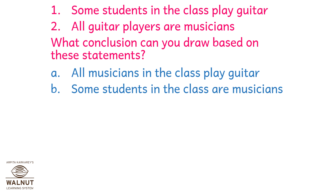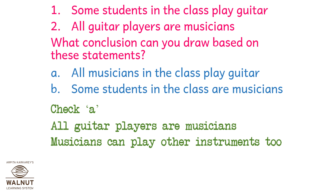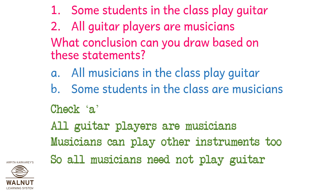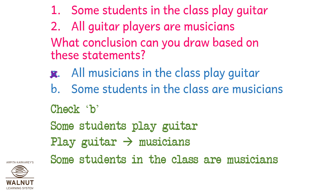Point 1: Some students in the class play guitar. Point 2: All guitar players are musicians. What conclusion can you draw? Option A: All musicians in the class play guitar — but musicians can play other instruments too, so all musicians need not play guitar. Option A is wrong. Option B: Some students in the class are musicians — some students play guitar, and playing guitar means they are musicians, so some students in the class are musicians. This is correct.